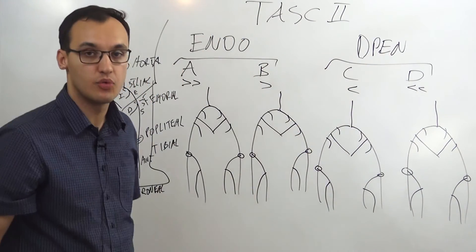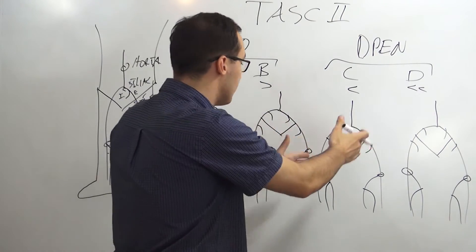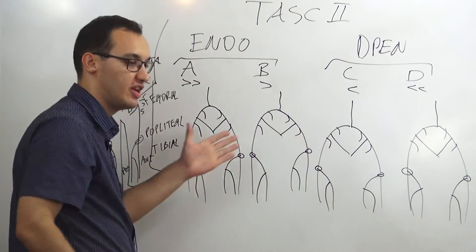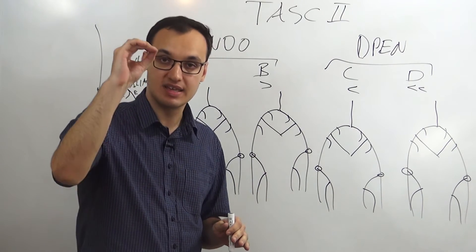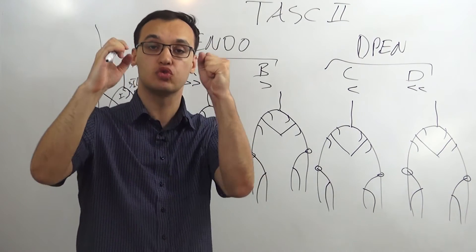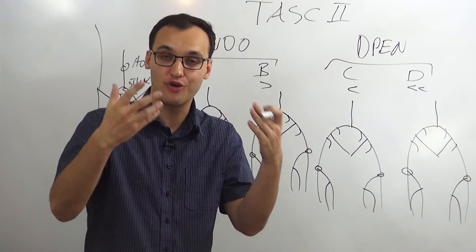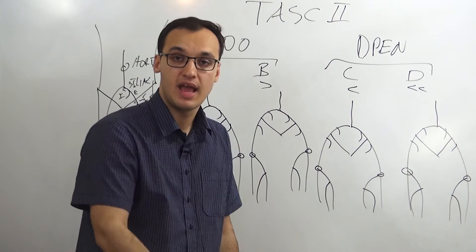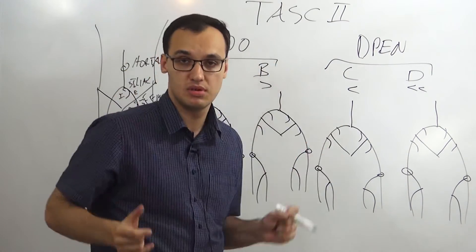These four diagrams represent four different patients. A and B patients will have endovascular treatment; C and D patients will have open revascularization. Now we need to learn what distinguishes them. All four patients have the same arterial system, but they have either stenosis — a narrowing of the artery — or occlusion — a total blockage where no blood can flow through.